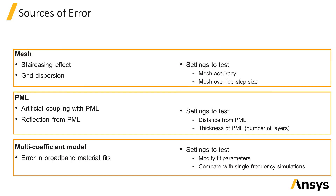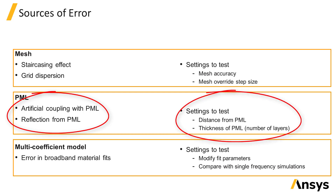If PML absorbing boundary conditions are used, there can be errors introduced if the boundary is placed too close to the structure such that there is coupling of fields between evanescent fields of the structure and the PML material. There can also be artificial reflection from the PML material, and this error can be reduced by placing the PML boundary farther away from any scattering objects and increasing the number of layers of PML material used.